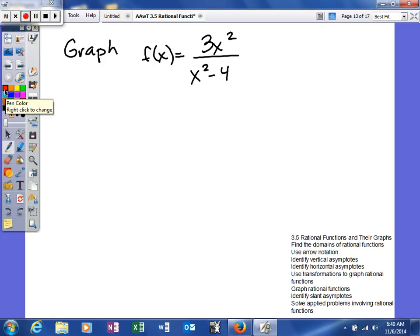First thing we're going to do is test for symmetry. Now as you can see, the top has an even degree and there's only one term, so therefore it's even. The bottom polynomial is also even, so this time we actually have an even function and what that tells us is